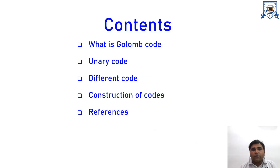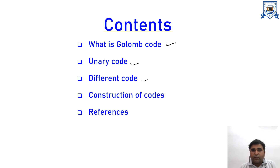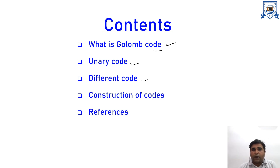Before starting the topic, we just look at the contents used in this video. The contents are: what is Golomb code, what is unary code, and what is truncated binary (different) code. Basically, we have to find out the unary code and the truncated binary code in order to find out the Golomb codes for a particular question.